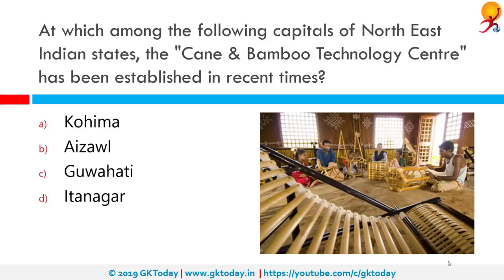At which among the following capitals of Northeast Indian states has the Cane and Bamboo Technology Centre been established? The correct answer is Guwahati. The CBTC established at Guwahati with support from a UNIDO project is supported by the Department of Science and Technology of the Government of India. It is tasked to identify and promote technologies, enhance income and employment in the Northeast, network with resource support and sectoral agencies, impart training and provide access to improved technologies, and function as an information hub.